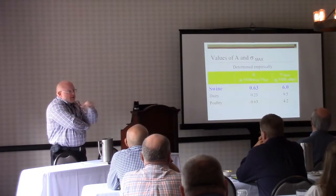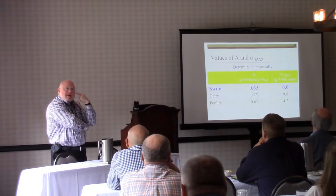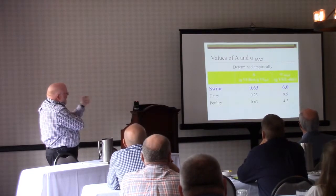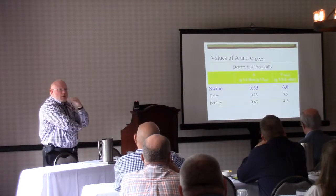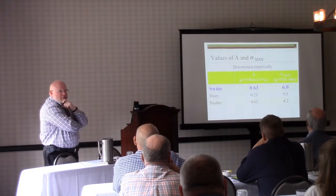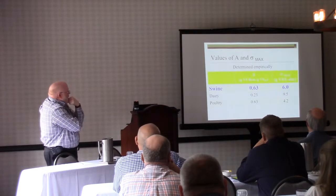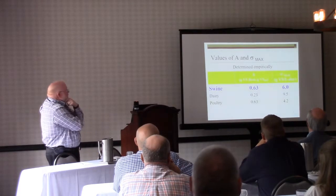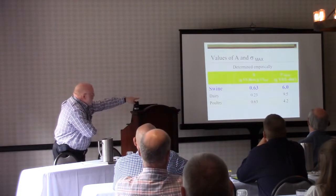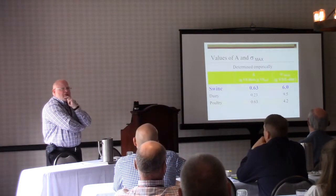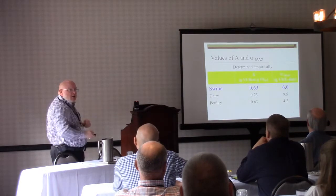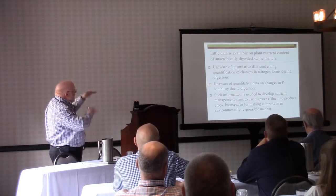We used swine primarily - we did some poultry litter but wanted to do swine first to figure out if our idea was working. These are the numbers from Hill's work. For swine manure under good mesophilic, well-mixed, steady-state conditions, 63% of the volatile matter will be destroyed, with a critical loading rate of 6 grams of volatile solids per liter digester volume per day. Dairy and poultry numbers are very similar. For those interested in poultry digestion, that 4.2 is the critical loading rate - lower because of ammonia/ammonium inhibition, which is the inhibition function.